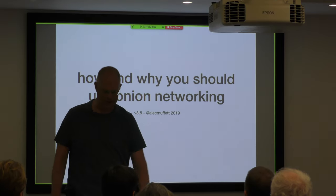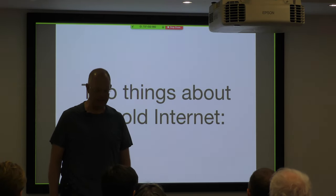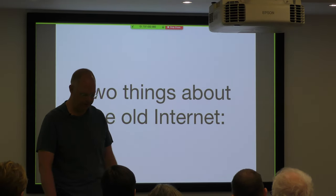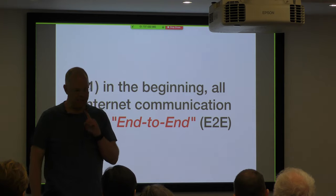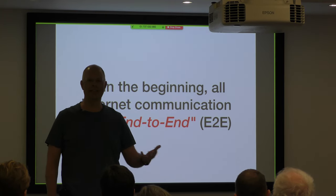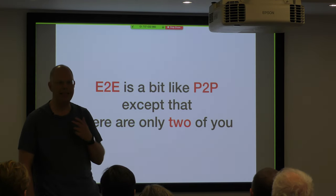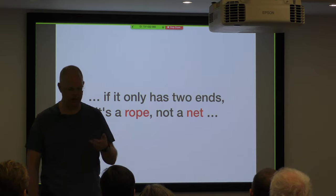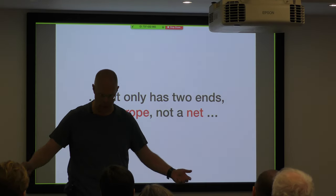So this is a presentation called 'How and Why You Should Use Onion Networking.' There are two things which I find terribly fascinating about the old internet. Firstly, in the beginning, the way we did communication on the internet was all what we would now call end-to-end. It's a bit like peer-to-peer, but there's only two of you — if you have something that only has two ends, it's a rope, not a network.